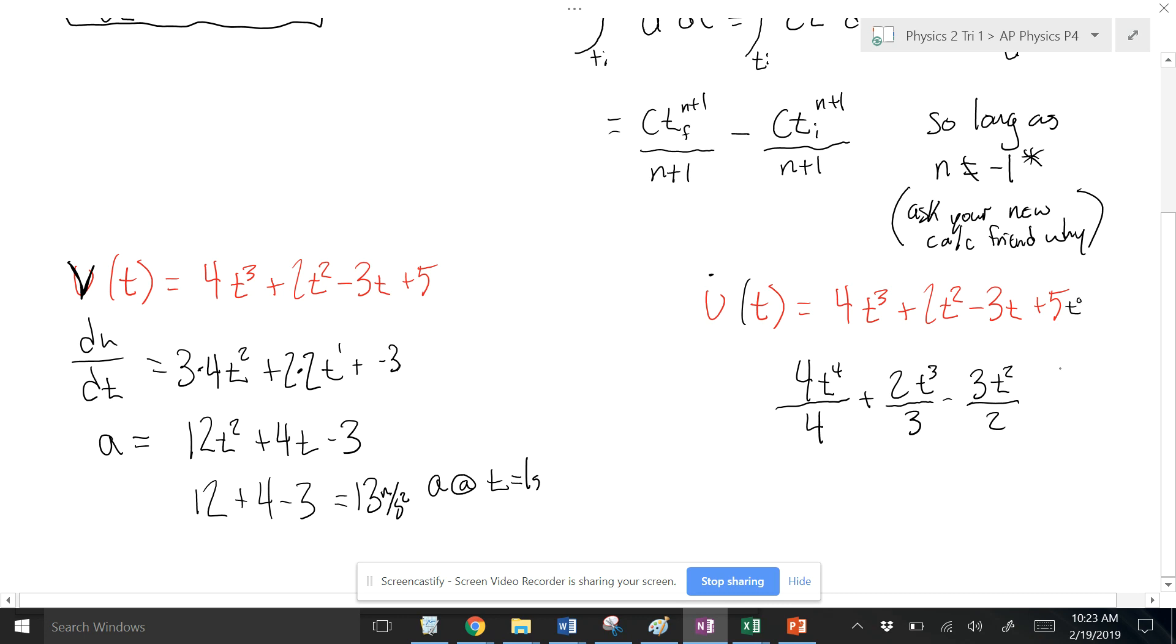And then this plus 5, effectively, this is t to the 0. So that's going to become 5t to the 1st over 1. And then we can simplify here. So 4 over 4. So this is going to be t to the 4th plus 2/3 t cubed. We're doing math stuff. We might as well leave it in fractional form. Minus 3/2 t squared plus 5t plus c.